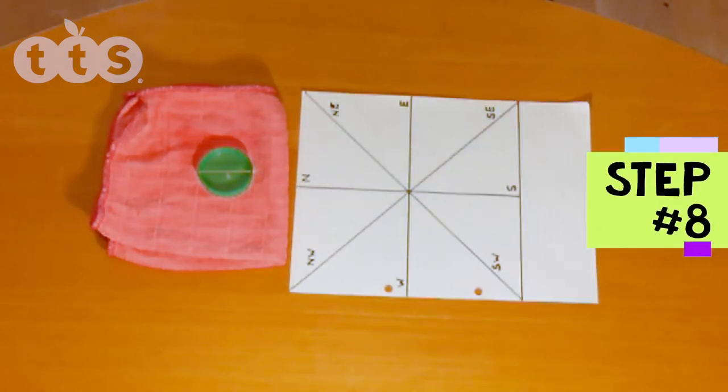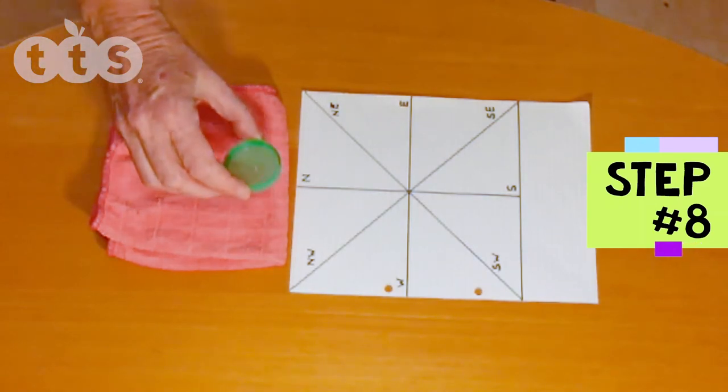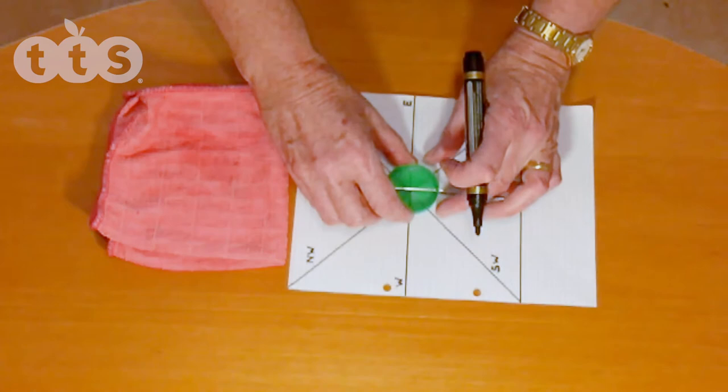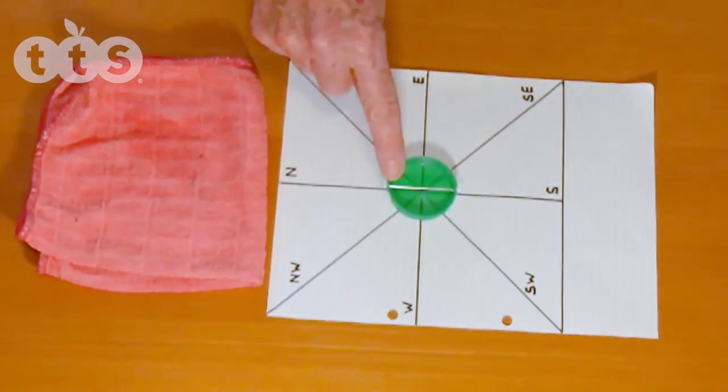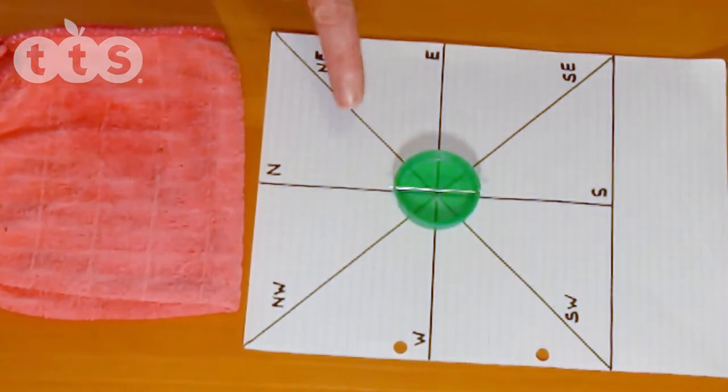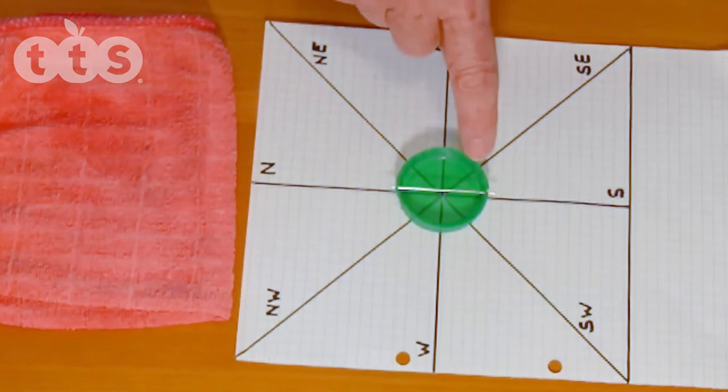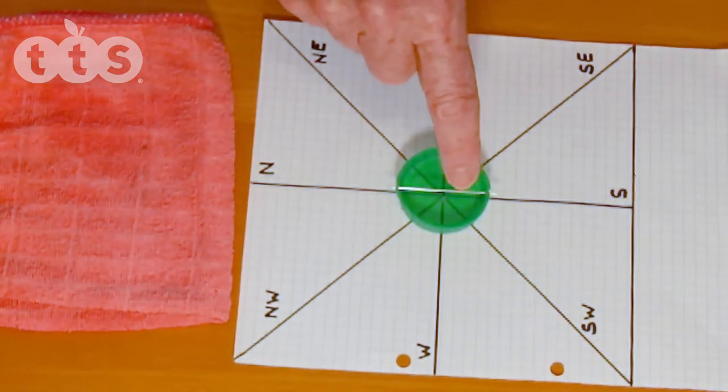Step eight is to mark up the compass dial. Place the bottle lid on the paper with the hole in the middle of the cross and the correct end of the needle pointing south. Mark the eight points of the compass on the rim and then write on the lid N for north, S for south, E for east, and W for west.